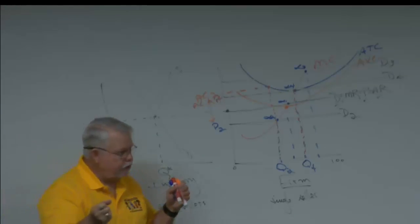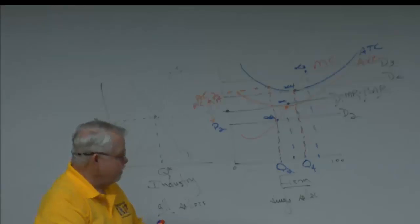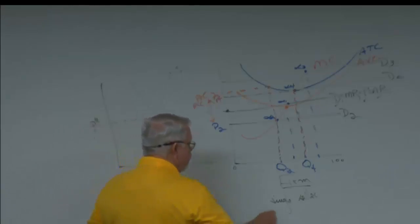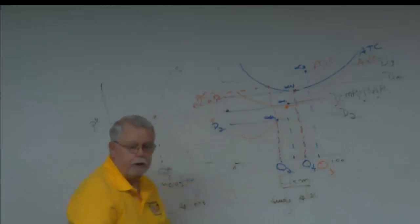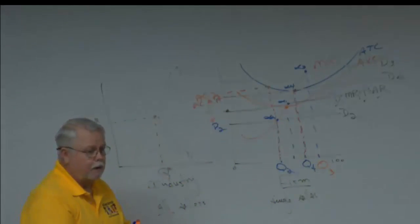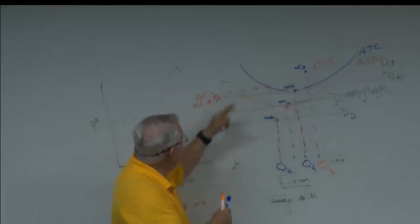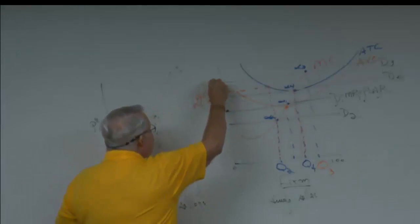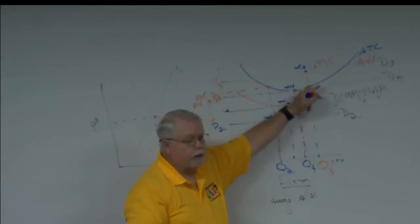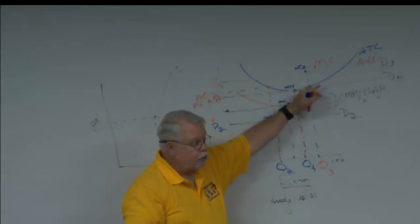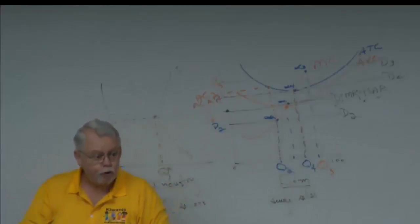What's going on at alpha 3? Read down to quantity 3. Read up to the price — here's D3, here's price 3. What's my average cost? Right there — average cost is below the price. I'm making an economic profit. You want to be ready to read those curves that quickly.